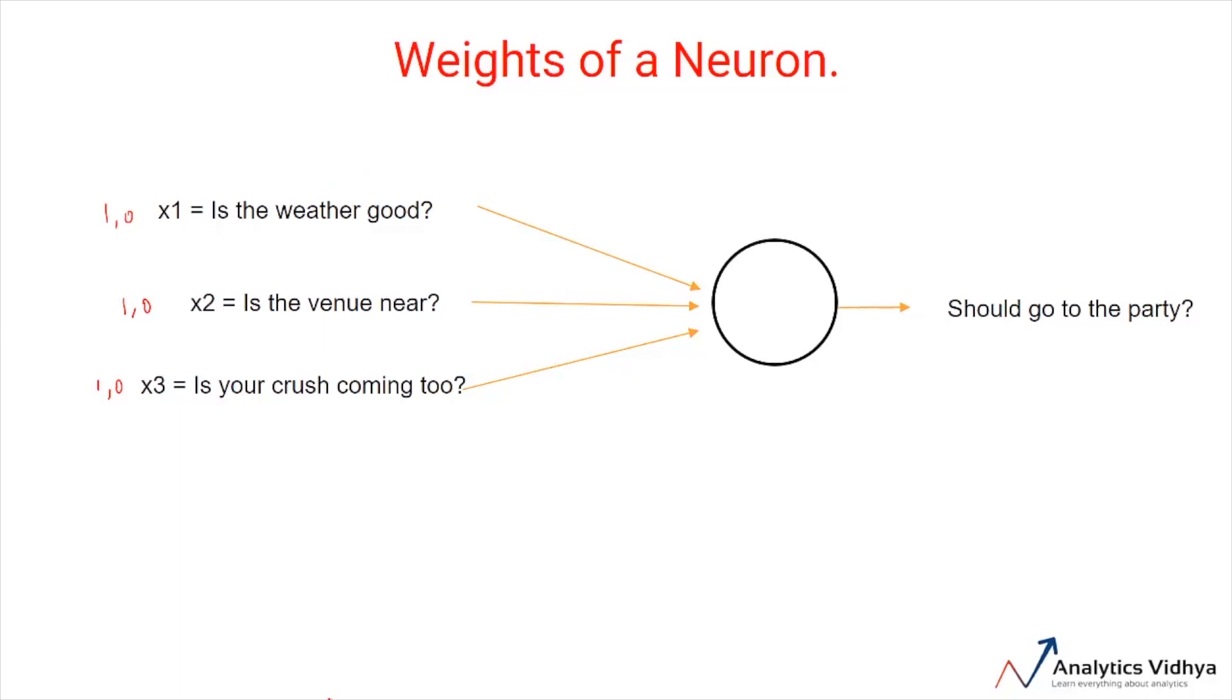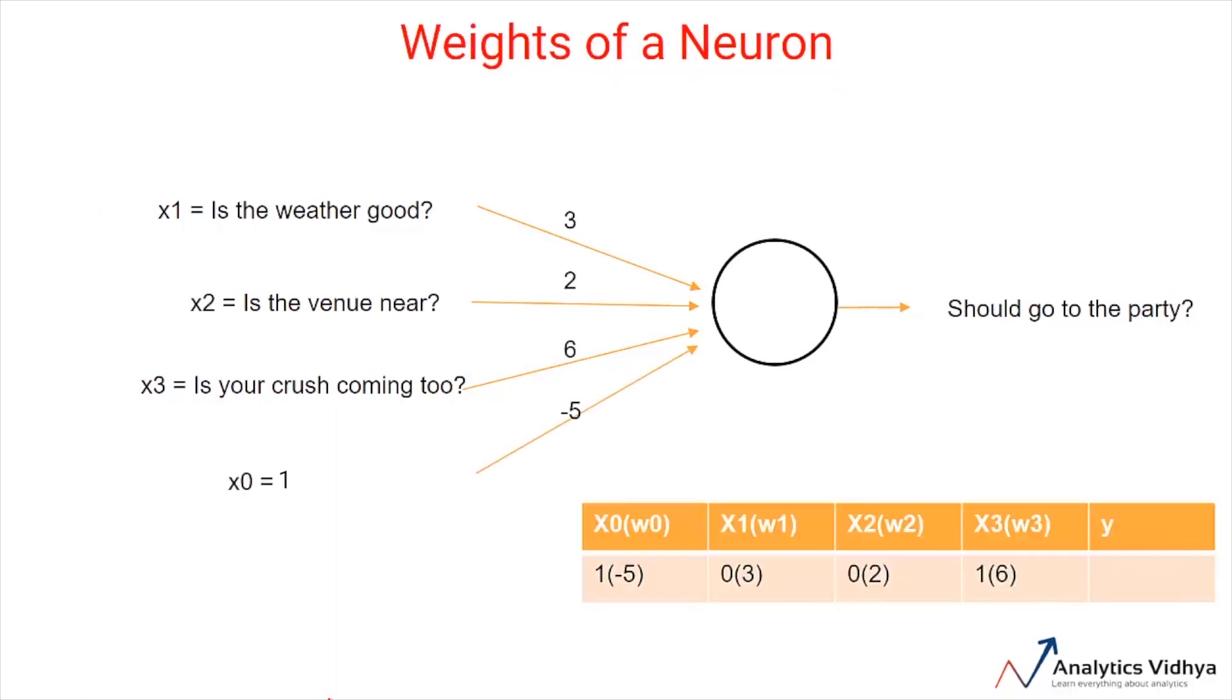Such a situation can be represented if we assign weights to inputs such as this. We can assign a weight of 3 to the weather, a weight of 2 to the venue, a weight of 6 to the crush. Now, if the sum of all these three factors is greater than a threshold of 5, then you can decide to go to the party otherwise not.